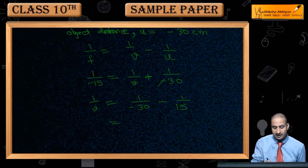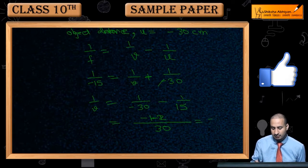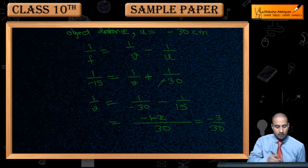You can see that 1 by v is equal to minus 1 by 30, and then minus 1 and minus 2 is equal to minus 1 by 30.